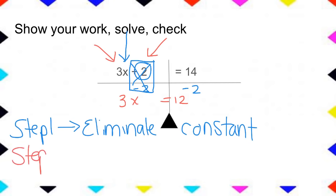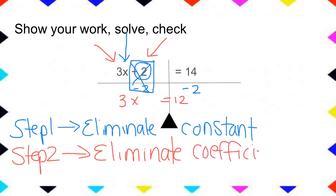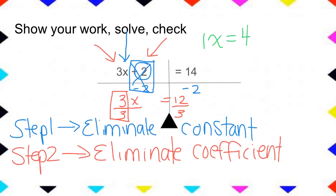Step two — write this down — we are going to eliminate our coefficient. That's the multiplier that's stuck onto our variable. Right now I have three times X, so I'm going to use my inverse operation. Instead of multiplying by three, I'm dividing by three. I can't do something to the left that I don't also do to the right. Three divided by three gives me one. Generally we just eliminate that and say X equals 12 divided by three, or four.